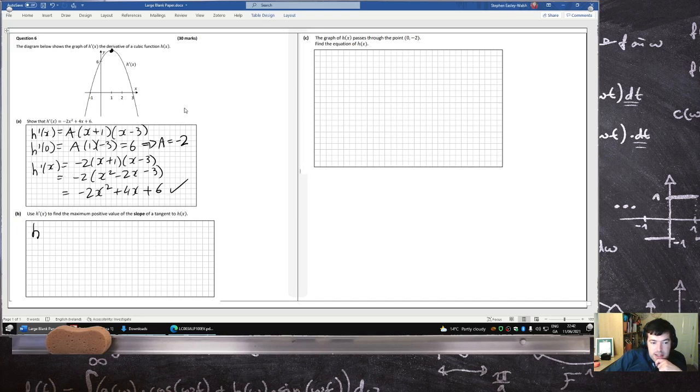Now the language here is a bit confusing. Use h dash to find the maximum positive value of the slope of the tangent to h(x). When they say use h dash, are they permitting me to take a second derivative? Because I could complete the square. It's odd. I'm going to play it safe and go with completing the square.